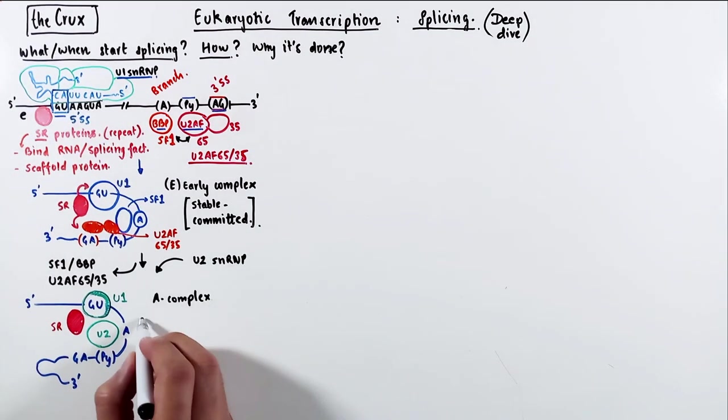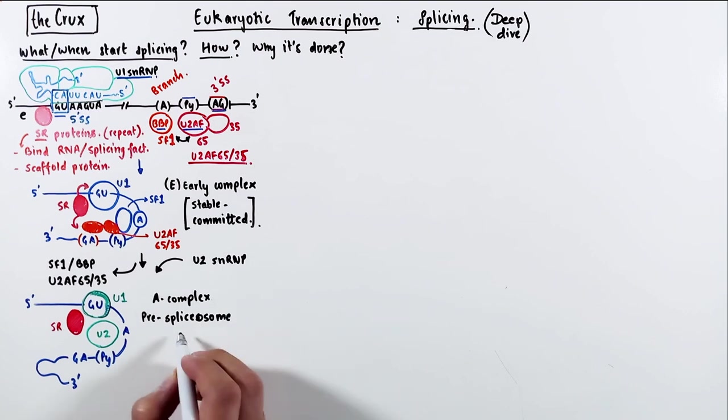The SR protein still sticks around in this complex, and this complex is called A complex, also referred to as the pre-spliceosome complex.